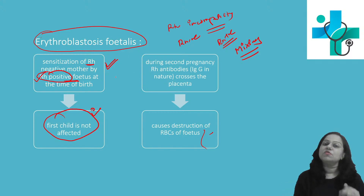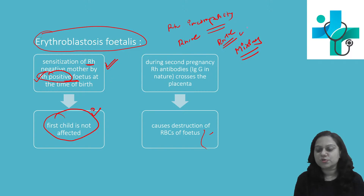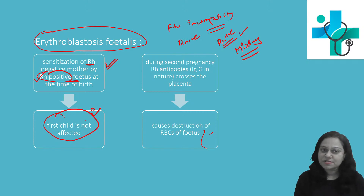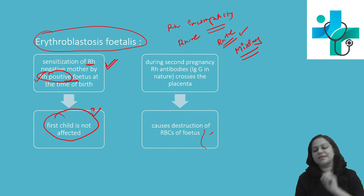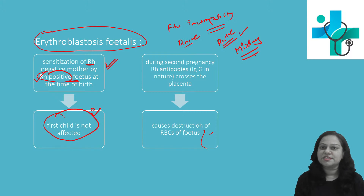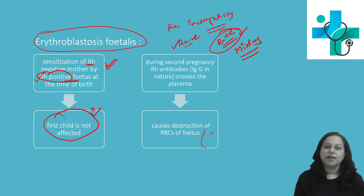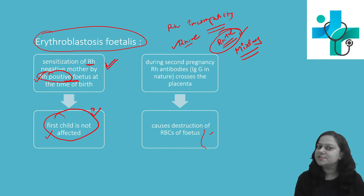Because the mother was never sensitized with RH positive blood previously. Now for the first time, there is a mixing of the blood — RH negative and RH positive blood get mixed — so the RH negative mother is sensitized by RH positive blood. Here the first child is normal.